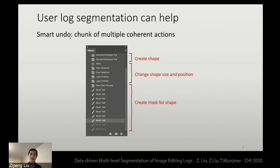We think that user log segmentation can help with this complexity in the user interface. Specifically, we are targeting a smart undo task, which is to chunk multiple coherent actions as opposed to a single action by the normal undo. Look at this example. You can actually group these individual actions into three chunks: create shape, change the shape, and create mask for shape.